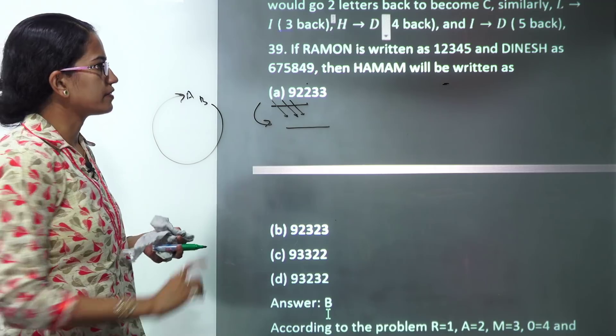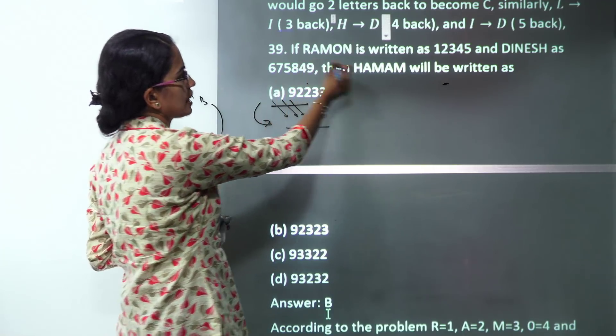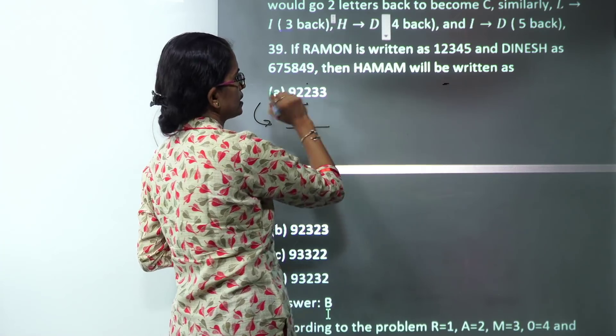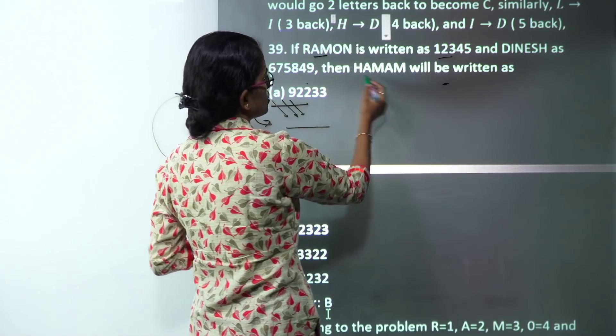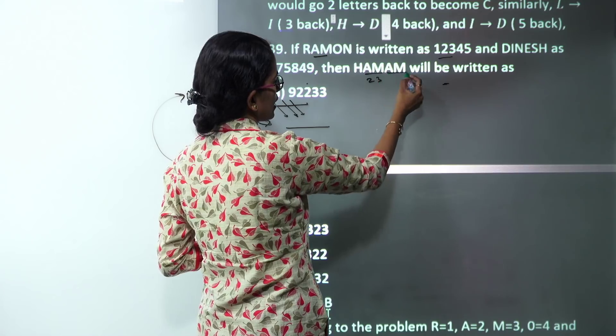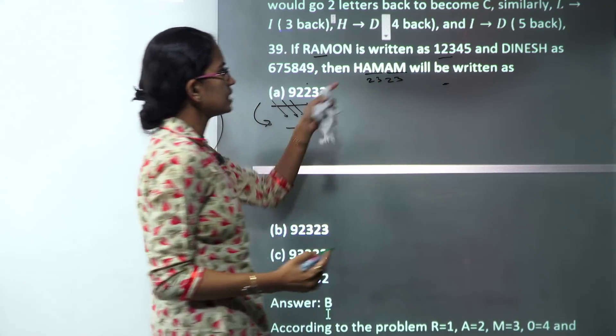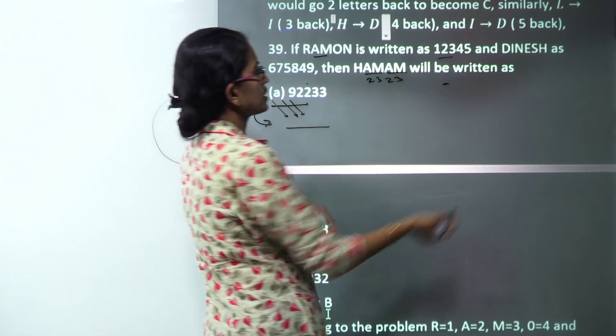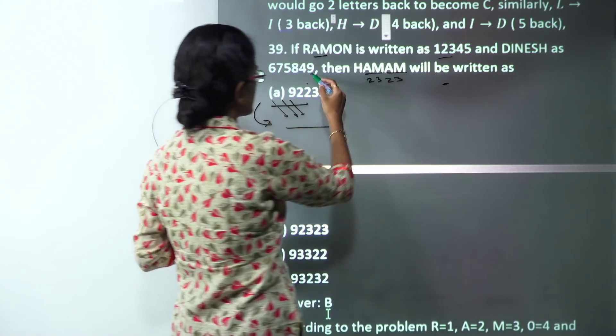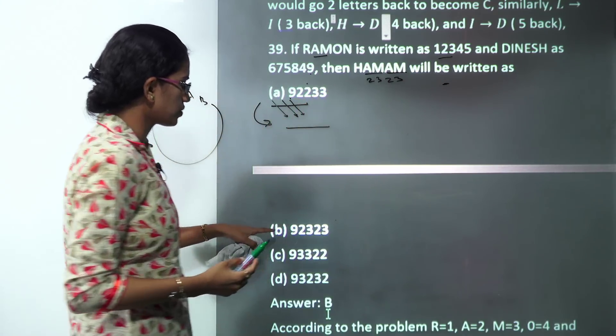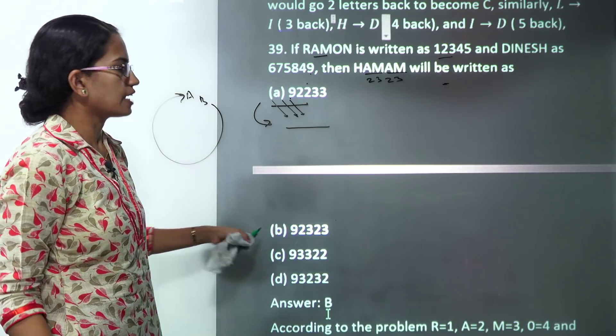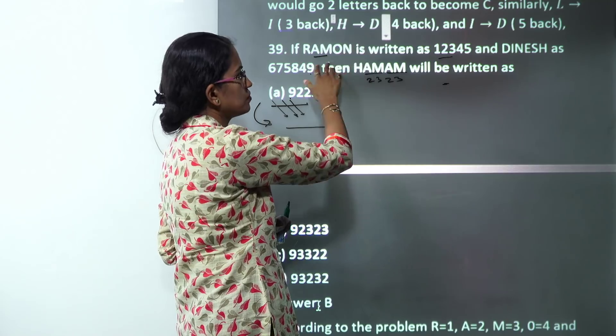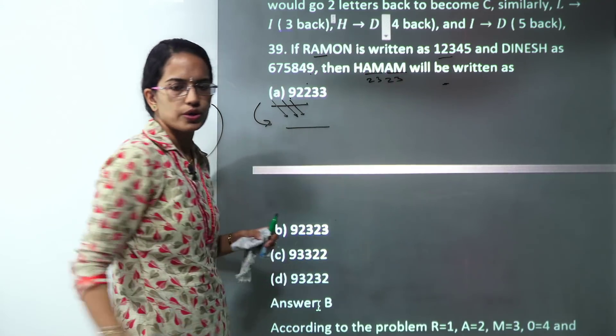The next question is very simple. You have Raman that is written as this, Dinesh that is written as this. Then what is Hamam written as? So AM is written as 2, 3. So AM would be 2, 3 and again AM would be 2, 3. So with just that information, I can have my answer. However, if you further want to solve, I can say H would be 9. So it would be 9, 2, 3, 2, 3. That would be the correct answer. No need to solve it fully even. So AM with 2, 3 would lead to correct answer.